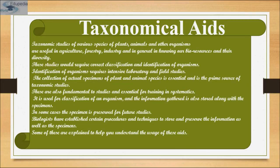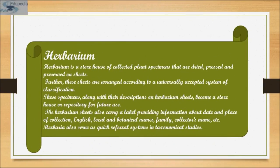The first taxonomical aid is the herbarium. A herbarium, sometimes known by the anglicized term 'herbar,' is a collection of preserved plant specimens. These specimens may be whole plants or plant parts, usually in a dried form mounted on a sheet, but depending upon the material, may also be kept in alcohol or other preservatives. The same term is often used in mycology to describe an equivalent collection of preserved fungi, otherwise known as a fugarium.